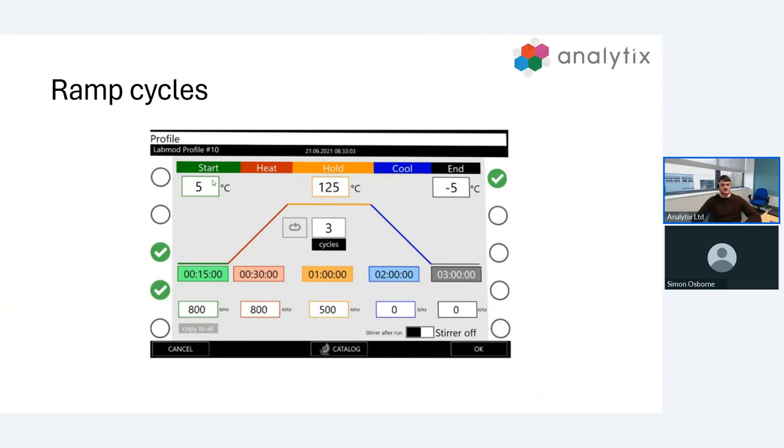We can also save ramp cycles. If you see the button at the bottom saying catalogue, this is our ramp catalogue. We can save methods that we'd like to use in the future here, and we can then simply press on them and apply them for future use.